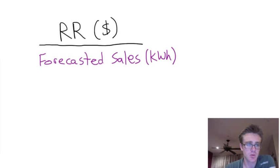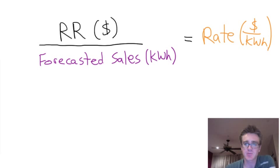So, we just divide this through and revenue requirement divided by forecasted sales equals the rate, which is going to be in dollars per kilowatt hour. So, through the rate case process, this rate is set.